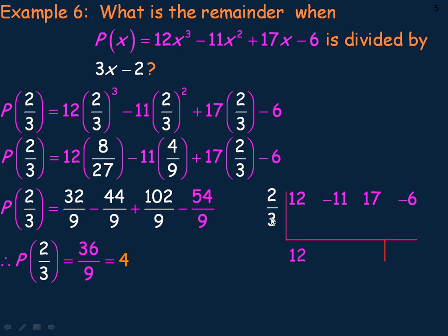So now we're going to multiply 12 by 2 thirds. 2 thirds times 12. The 3 goes into the 12 four times. So 2 times the 4 that's left is 8. And so we add negative 11 to 8, which is negative 3.